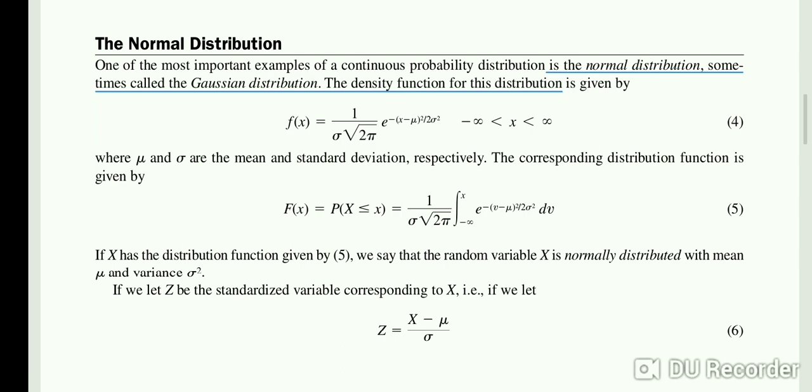Let's talk about normal distribution. It is one of the important examples of continuous probability distribution. Sometimes it is also called Gaussian distribution. The density function for this distribution is given by f(x) equals 1 over sigma times square root of 2π times e to the power minus (x minus μ) squared over 2σ squared.